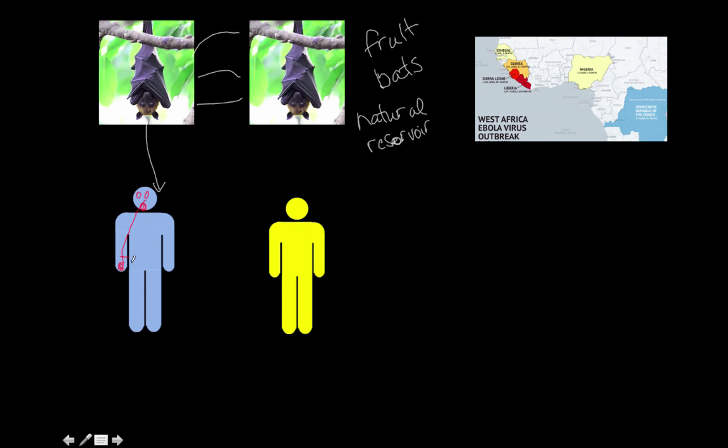So this is how we think a person might get sick. And in an outbreak, we can call the first person an index case. We have a special name for this person. They're the first person ill in the outbreak.